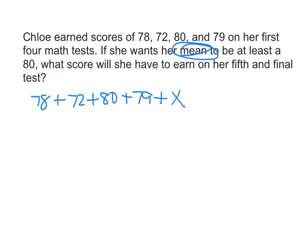So if we take all those scores and we divide them by how many scores there are, and there are five tests, we're going to divide that by five, and that should give us the average, which she wants to be at least an 80. So we're going to make that 80 there.